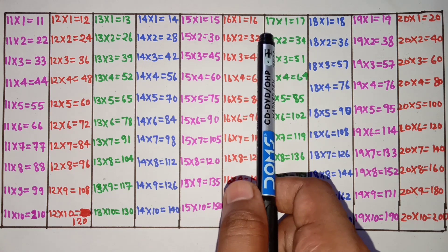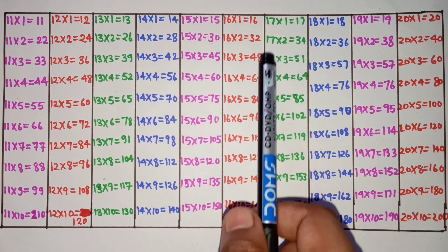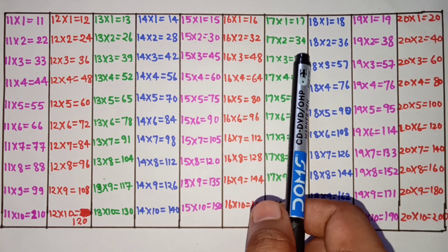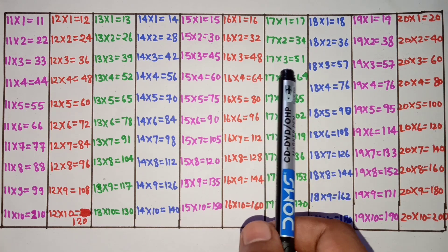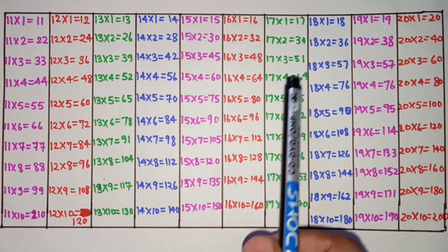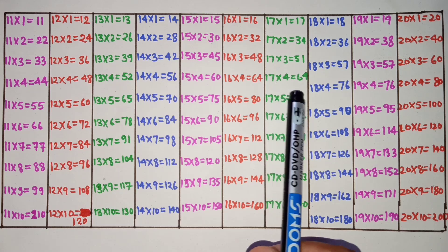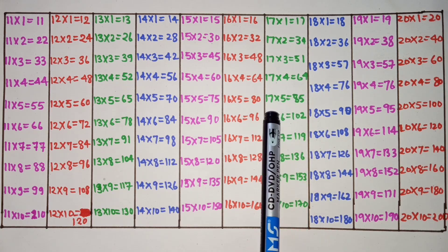17 1s are 17, 17 2s are 34, 17 3s are 51, 17 4s are 64, 17 5s are 85.